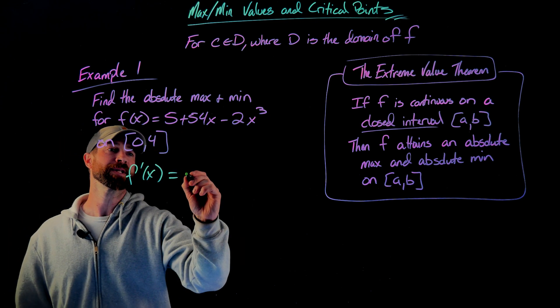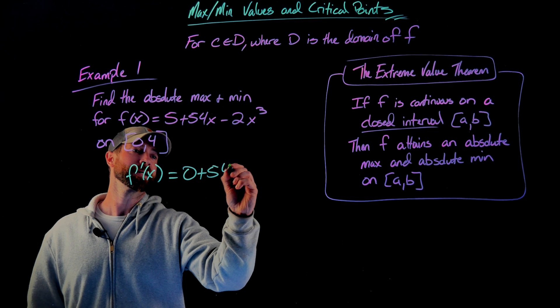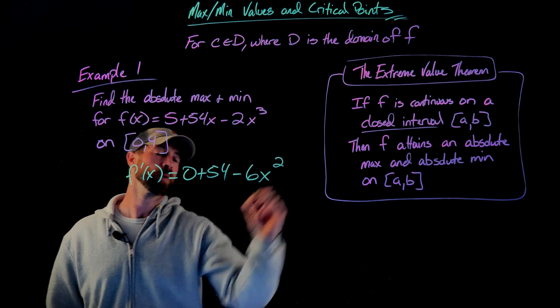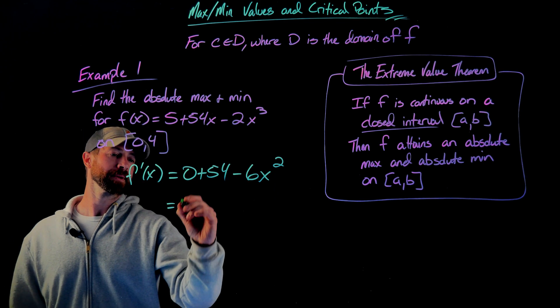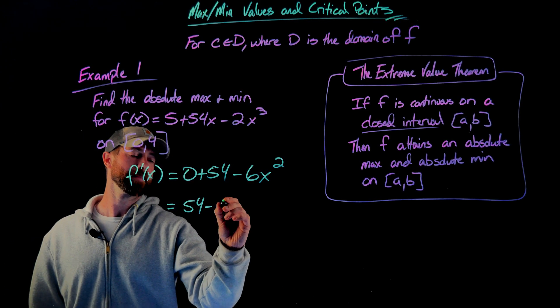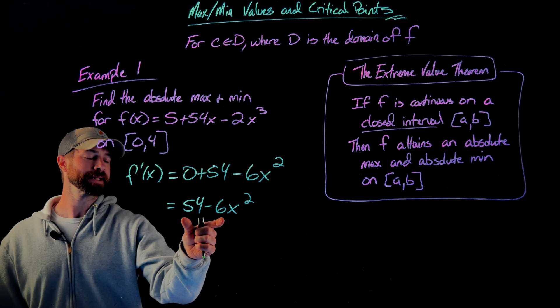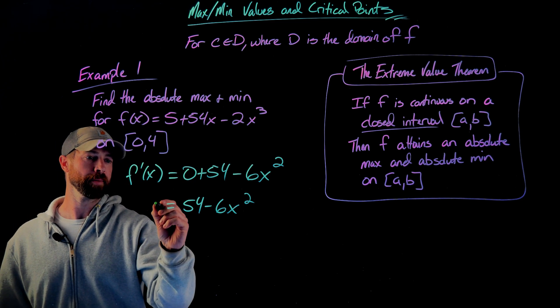I'm just using the power rule here. I get 0 + 54 - 6x². Let me clean this up to get 54 - 6x². I want to find out where this is 0. I know it's not undefined anywhere because it's a polynomial.